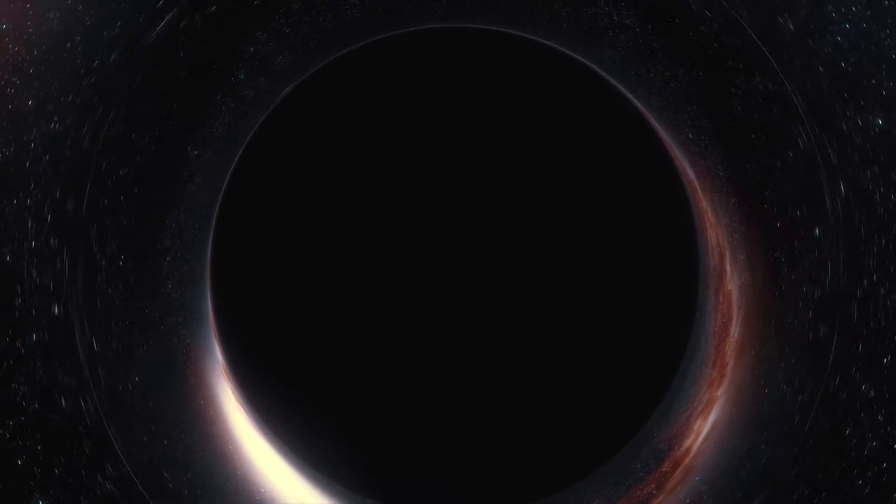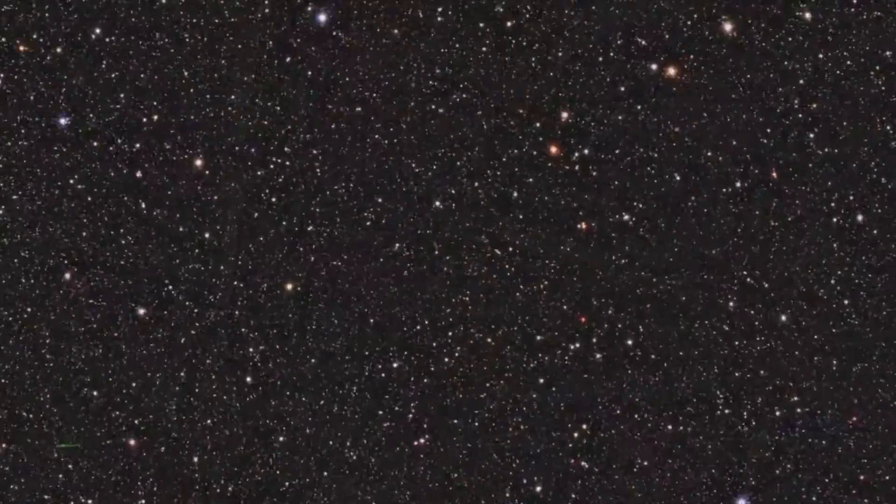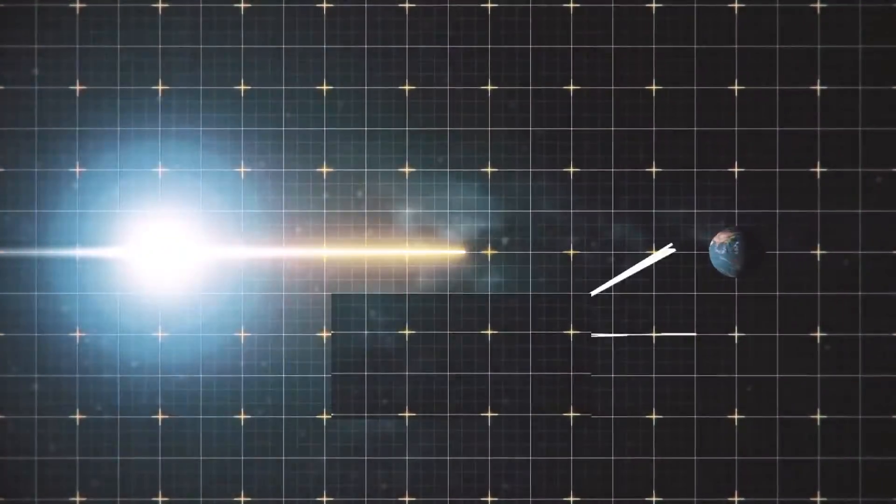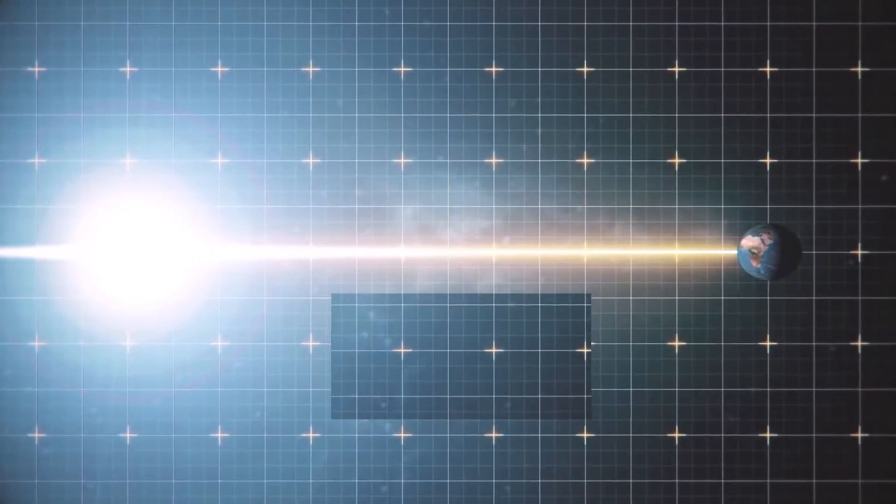A new black hole 10 times the mass of our Sun, 1,560 light-years away from Earth has been discovered. According to a new study, that's roughly twice as close as the previous closest black hole.